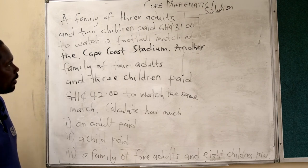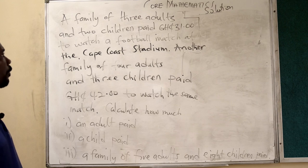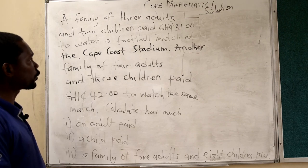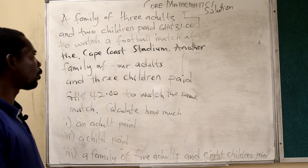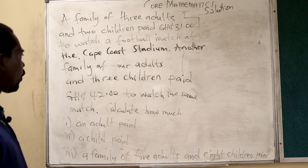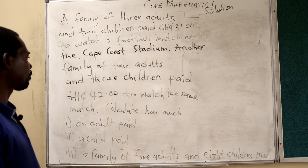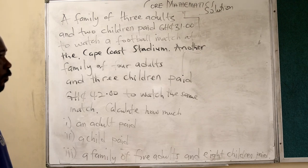Alright, so let's try and handle this question. A family of three adults and two children paid 31 cedis to watch a football match at the Cape Coast Stadium. Another family of four adults and three children paid 42 cedis to watch the same football match.